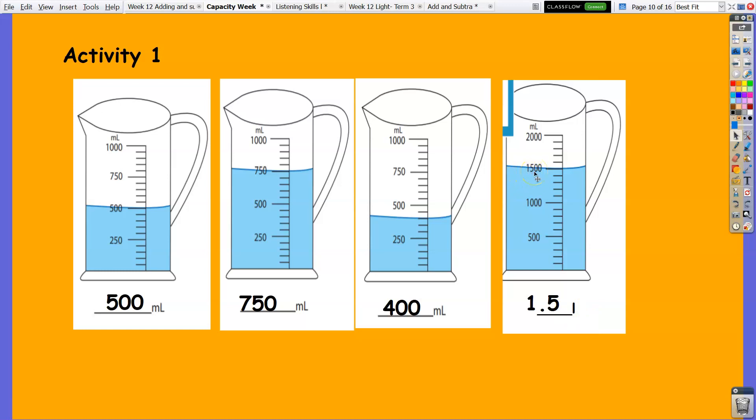So 1500 milliliters—1500 milliliters is equal to 1.5 liters. And how do we do that? Here are the conversion.